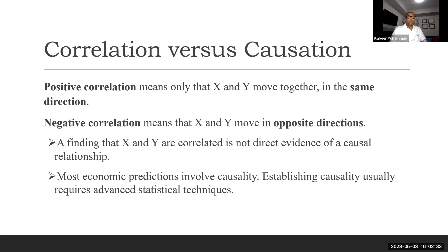What is positive correlation? It means only that X and Y move together. When X is increasing, Y is also increasing. Or when Y is increasing, X is increasing. In the same direction. When X is decreasing, Y is decreasing. That's a positive correlation.